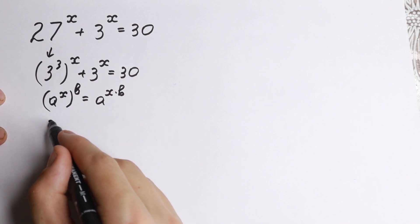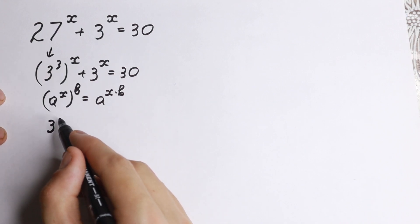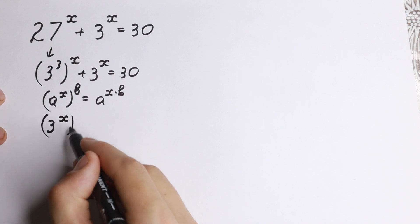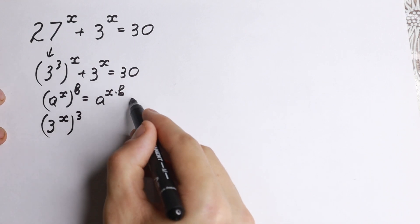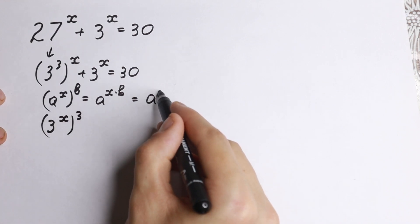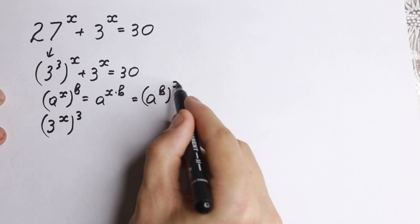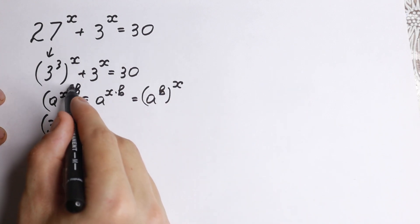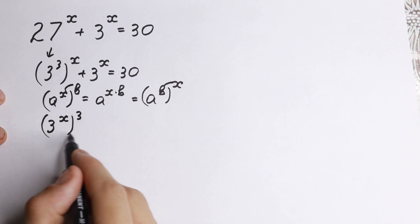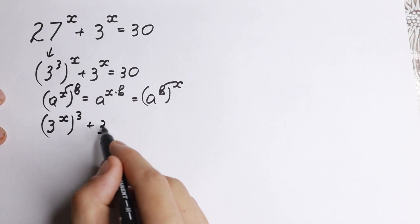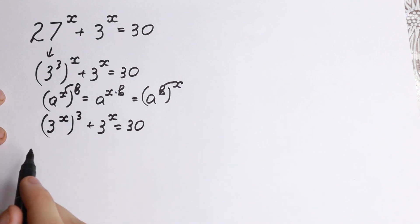So right now let's do this. We have 3 to the power x cubed, so we can easily change it because right now we can write it as a to the power b raised to the power x. We can change these powers. So plus 3 to the x equal to 30.